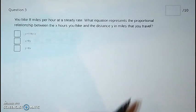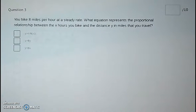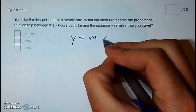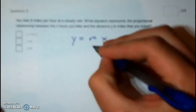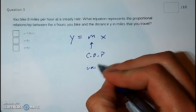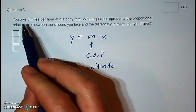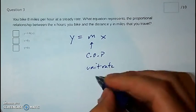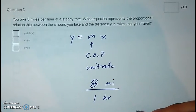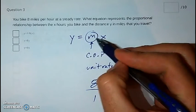Question three. You're able to go eight miles per hour at a steady rate, and they want to know what equation represents the proportional relationship between the x hours that you bike and the distance y in miles that you travel. In any proportional relationship, it is represented by y equals mx, and m is the constant of proportionality — it is the unit rate. They give us a unit rate: you bike eight miles per hour. So that needs to be an eight: y equals 8x.